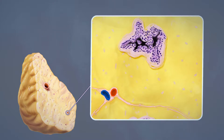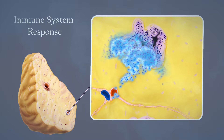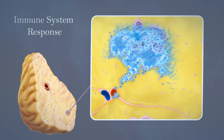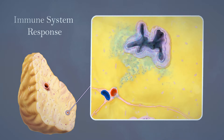While PanINs develop, some are recognized as foreign by the immune system. T-lymphocytes are carried through blood vessels, then migrate to the small ducts. Here, they kill the abnormal PanIN lesion cells.